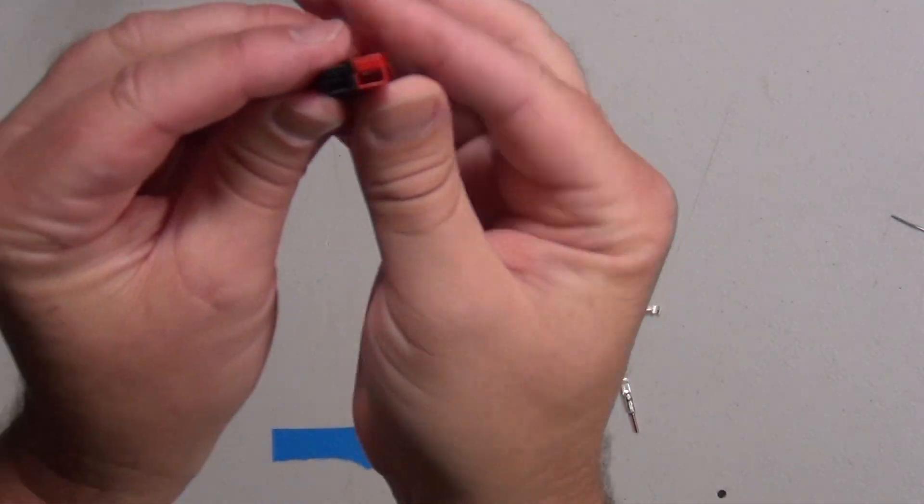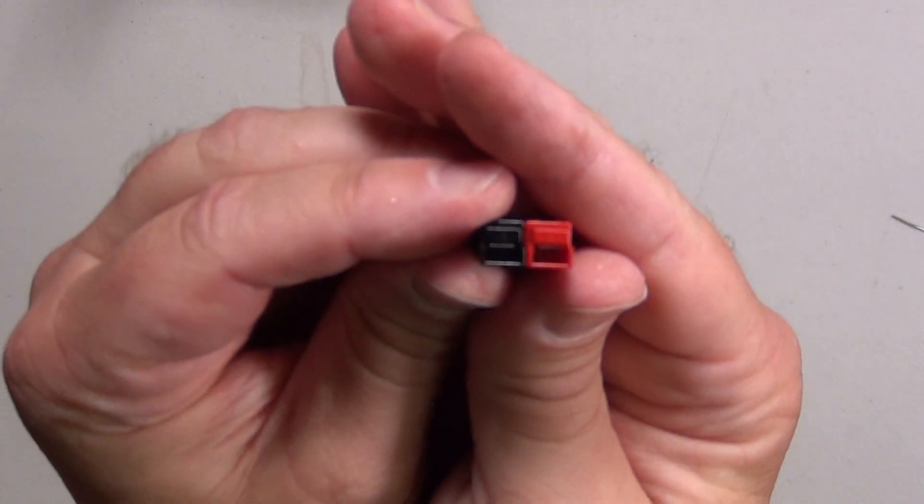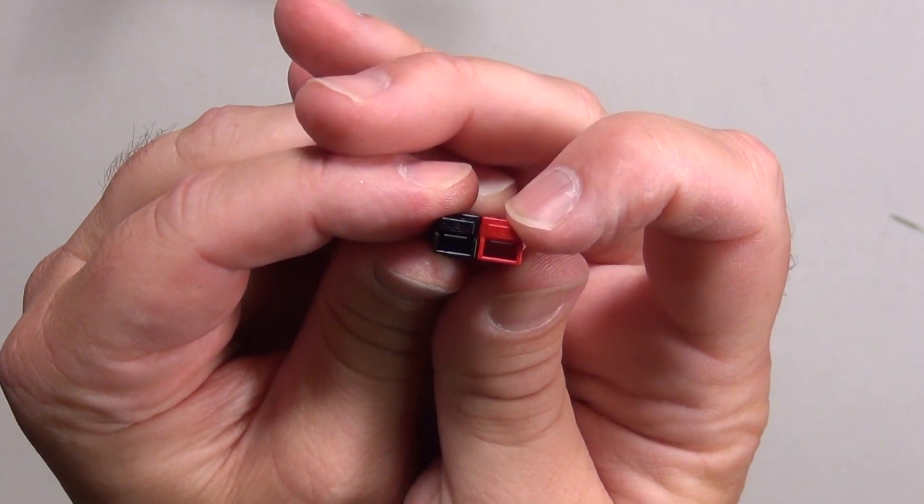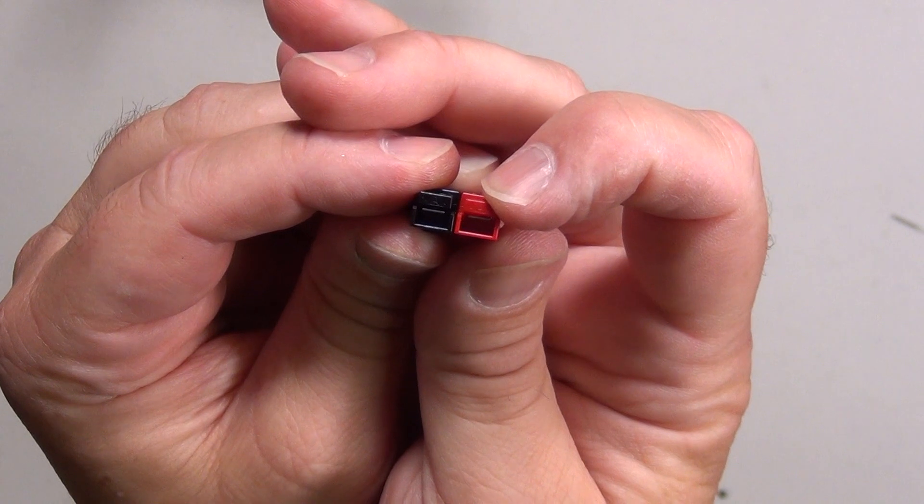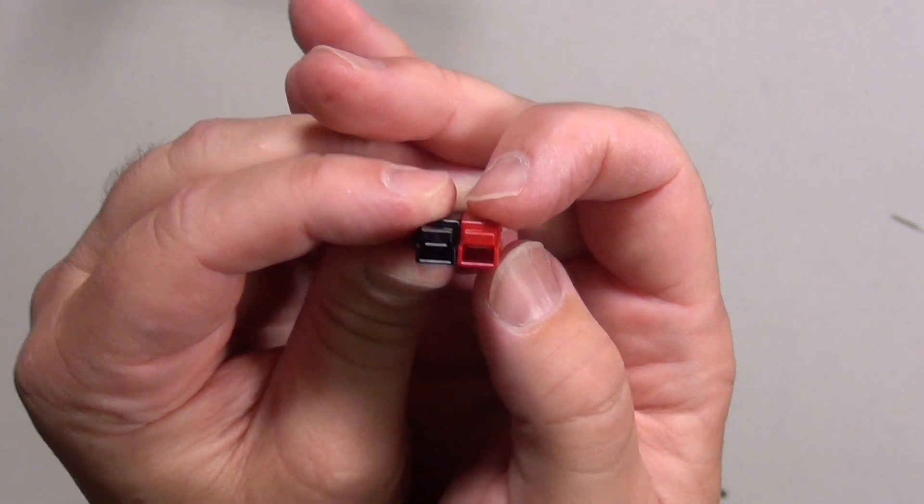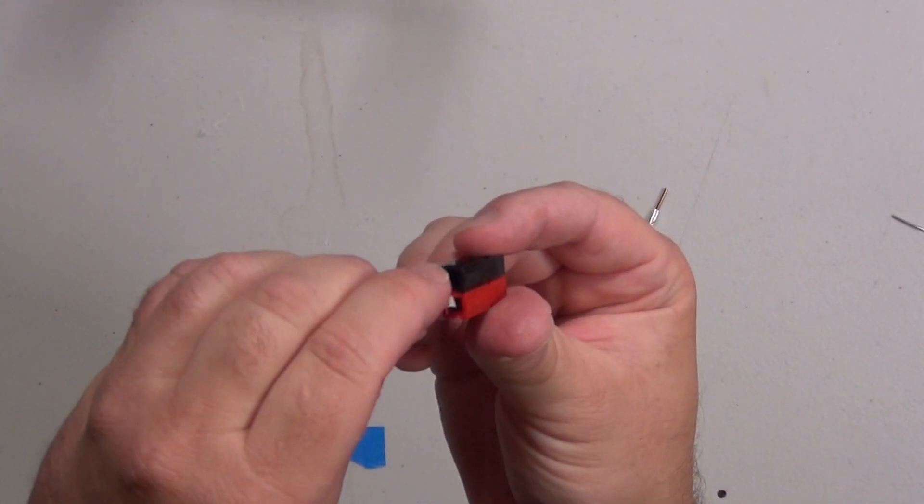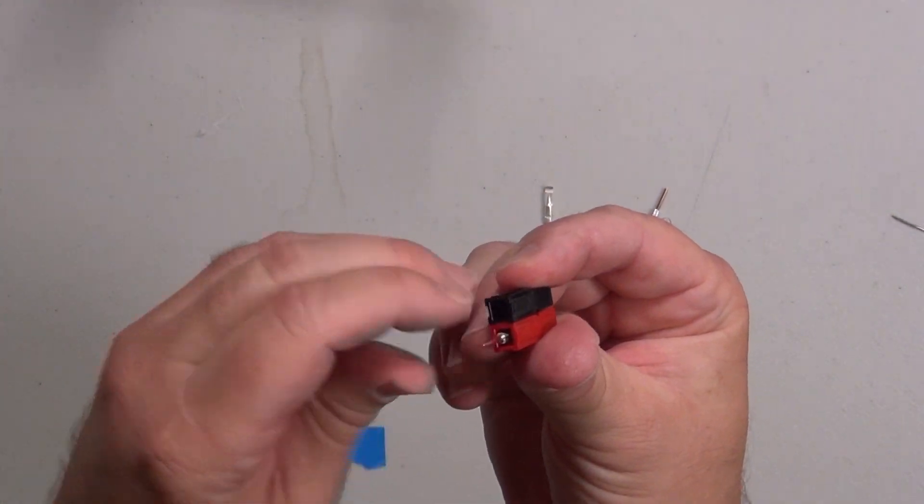When you're going to put these shells together, putting the connectors inside, on the top here, you can see there's a little A. Make sure it's right side up and that the red is on the right. You may need something to help push these down.